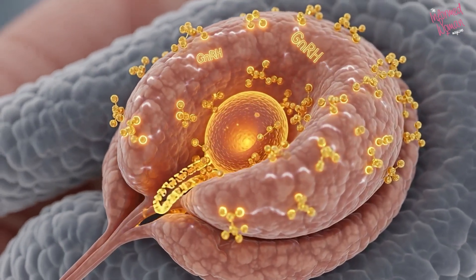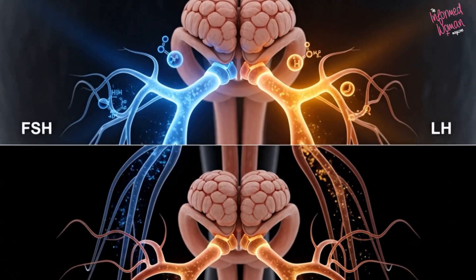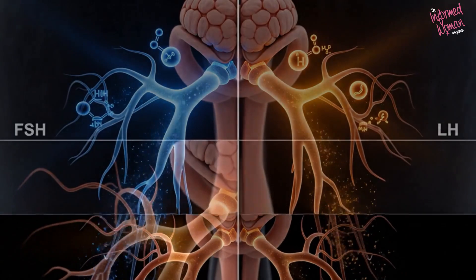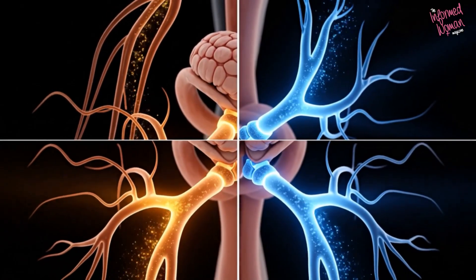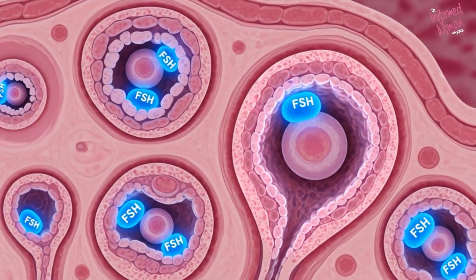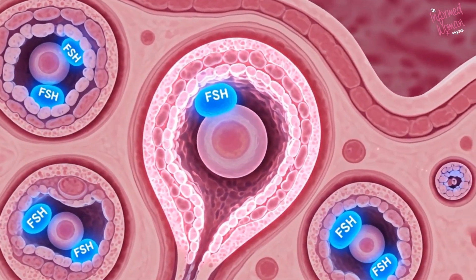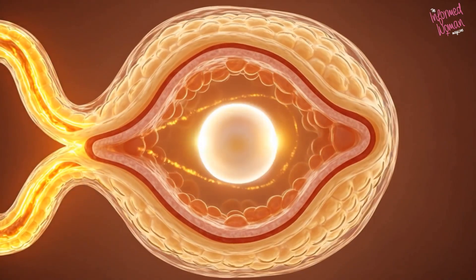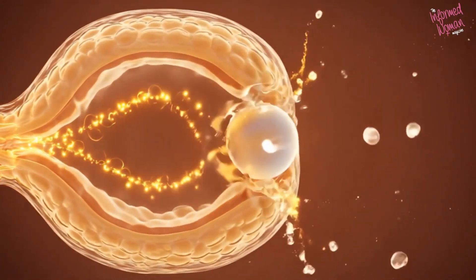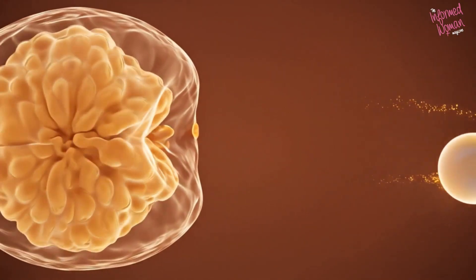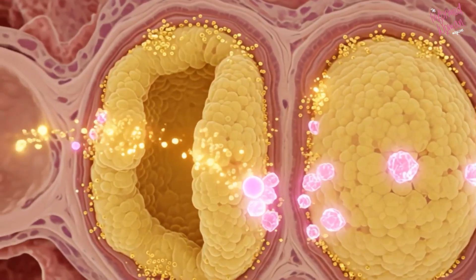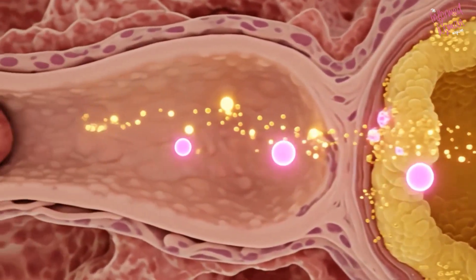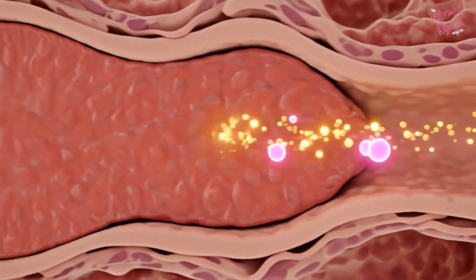GNRH stimulates the pituitary to release follicle-stimulating hormone, FSH, and luteinizing hormone, LH. FSH promotes follicle growth and maturation, while encouraging estrogen production from granulosa cells. LH triggers ovulation, releasing a mature egg, and transforms the follicle into the corpus luteum. The corpus luteum secretes progesterone and estrogen to prepare the uterus for pregnancy.